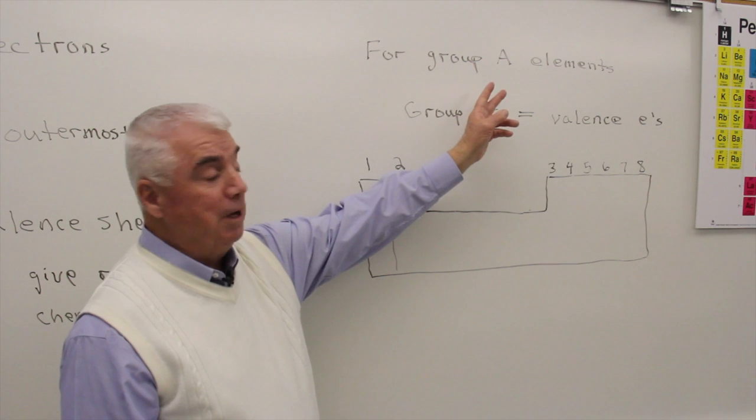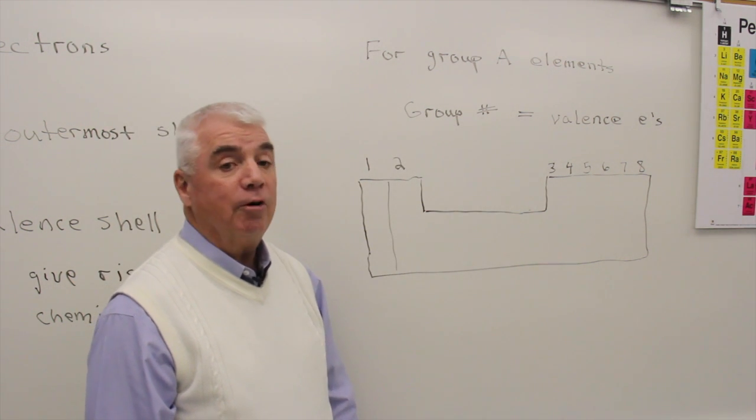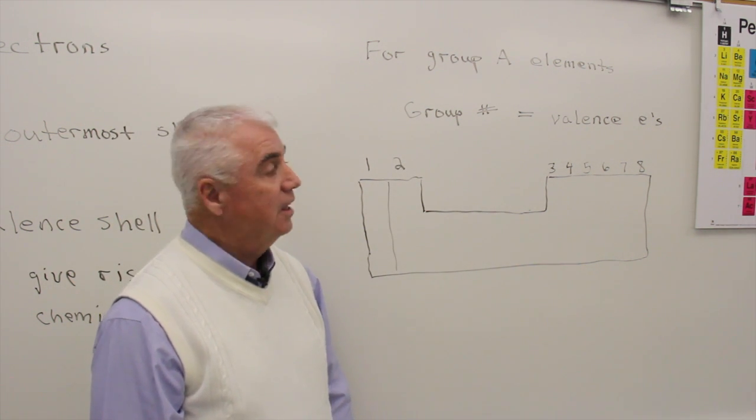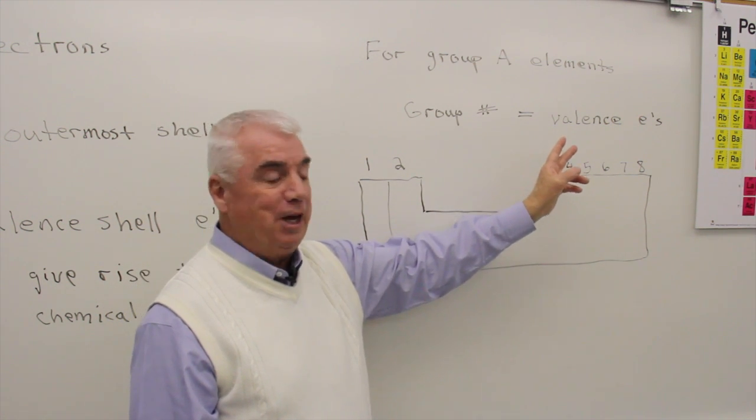For group A elements, the group number is equal to the number of valence electrons. Let's look at the periodic table, and I'll show you what we mean.